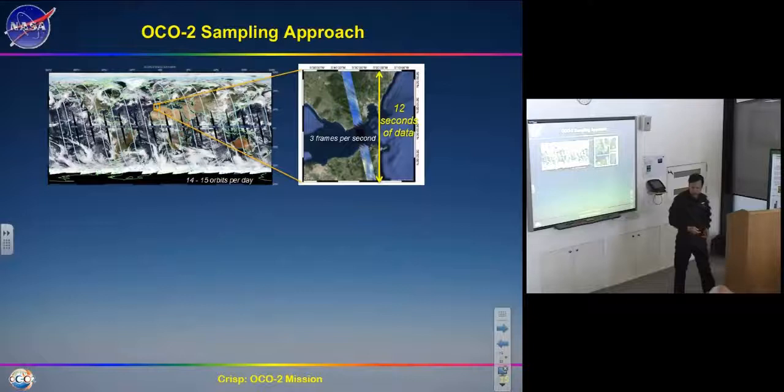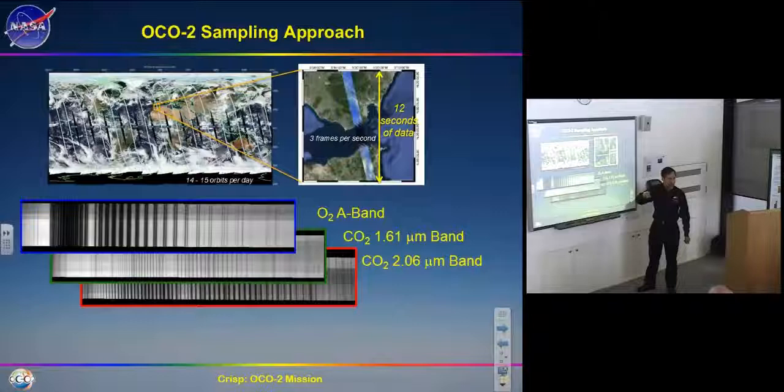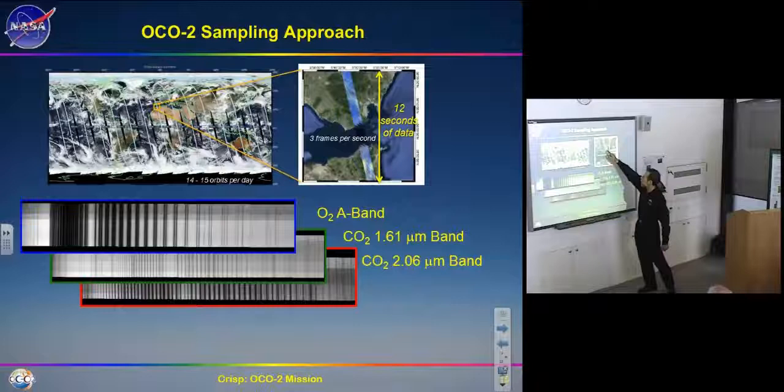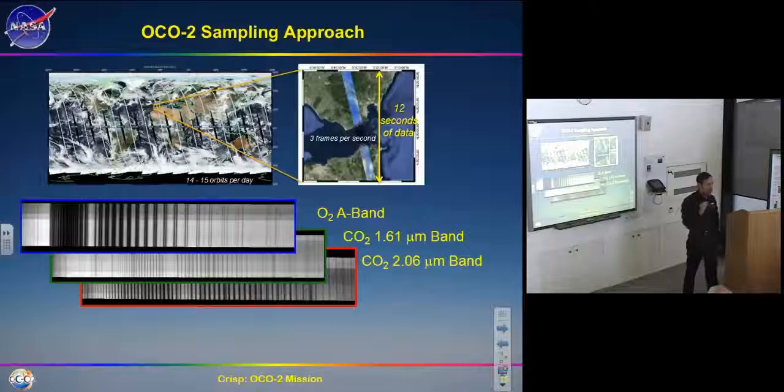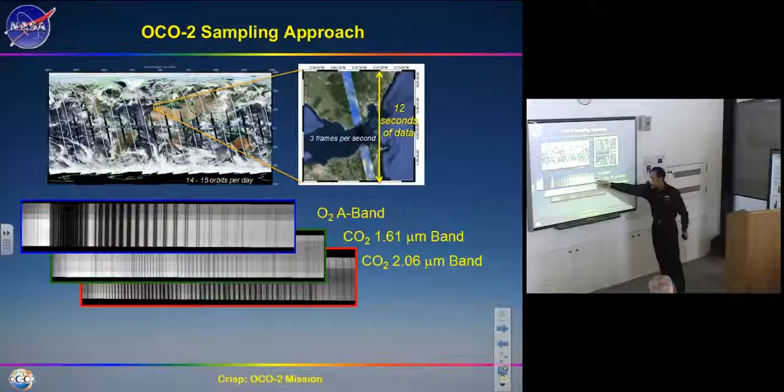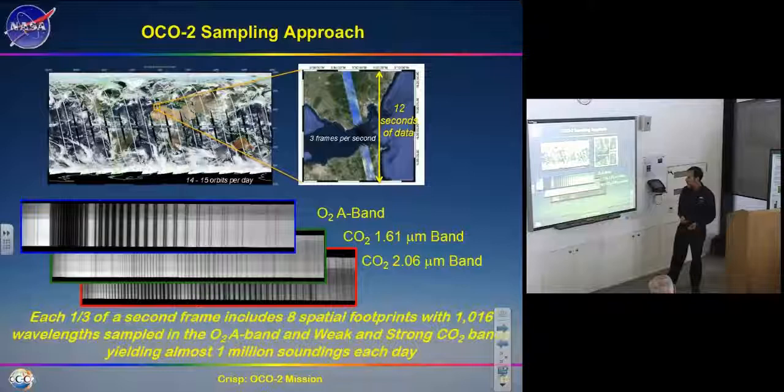We have to make a lot of measurements so that at least sometimes we get samples in cloudy regions. The swath going across the Strait of Gibraltar illustrates how narrow it is — this is not a mapping instrument, it's a sampling instrument. We take an oxygen A-band spectrum, a 1.61 micron CO2 band spectrum, and a 2.06 micron CO2 band spectrum three times a second as we fly over the Earth.